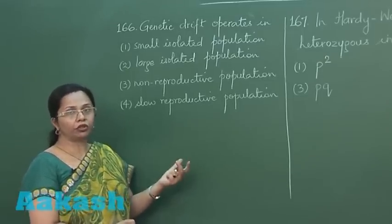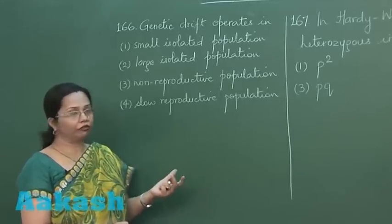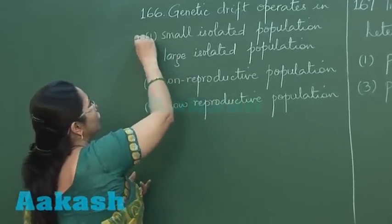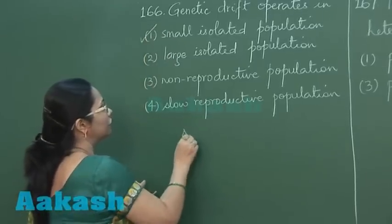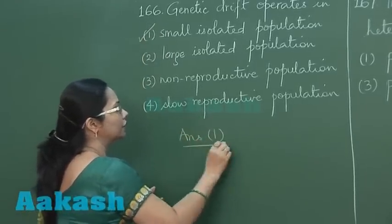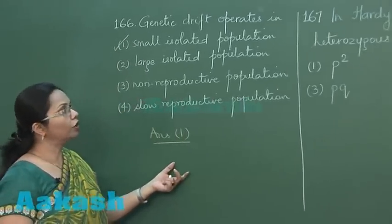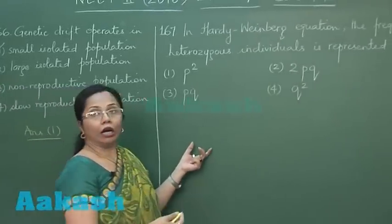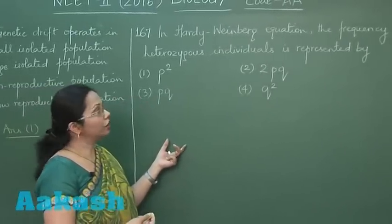In a large population, some representation of different alleles will be left. So here it's a direct option available: small isolated population, and that is our correct answer. Let's move on to the next question, 167.